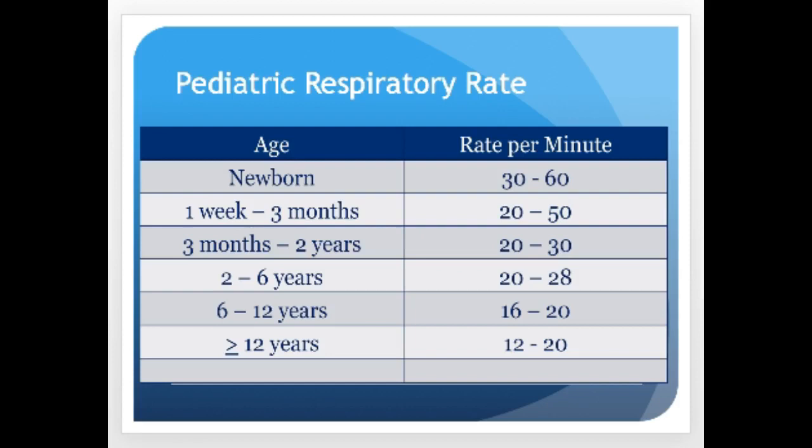The pediatric respiratory rate is faster — newborns may breathe 30 to 60 times per minute. By around six years old, they should be breathing similarly to adults, roughly 12 to 20 breaths per minute.